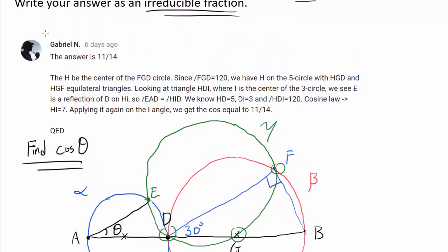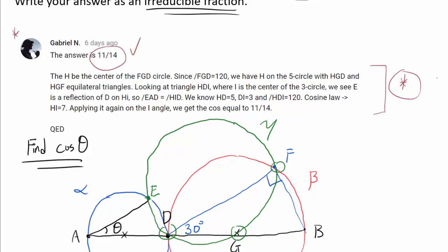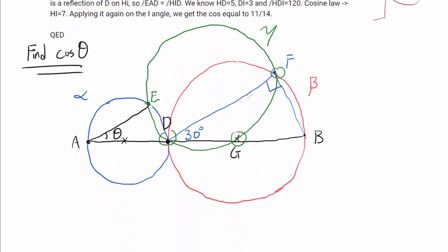Before we go on, I want to recognize Gabriel N, who was the very first person to correctly answer this challenge problem with the answer 11 over 14. Gabriel N's solution is going to be different from what I'm going to show you and is very clever. I highly encourage you to read it. Huge props to Gabriel N for being the first person. Now let's actually attempt this ourselves.